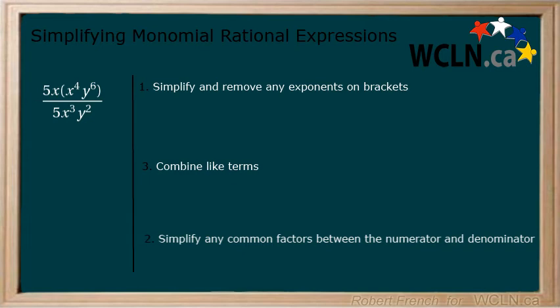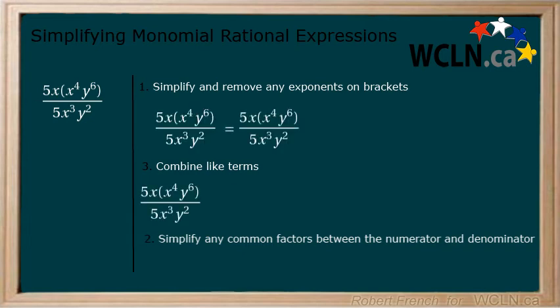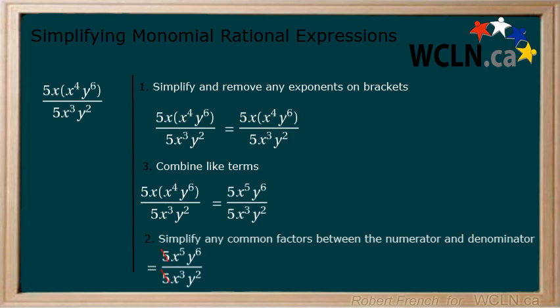Let's look at the previous example quickly and jump in after Step 1 is complete. Now combine the like terms to get 5x to the power of 5, y to the power of 6, over 5x cubed times y squared. The 5's cancel and we get x to the power of 5 minus 3, times y to the power of 6 minus 2. This gives us the final answer of x squared times y to the power of 4. As we can see, you get the same answer each time.